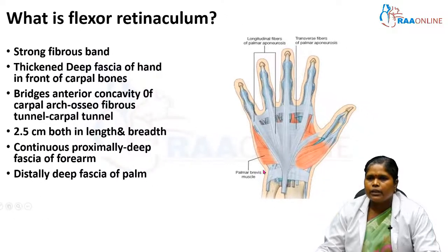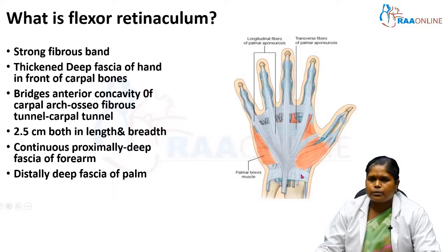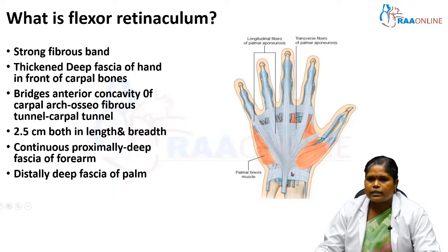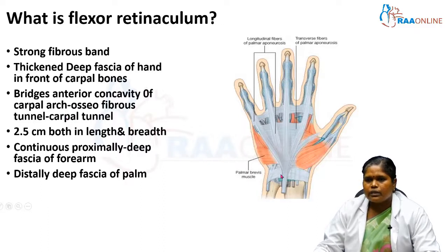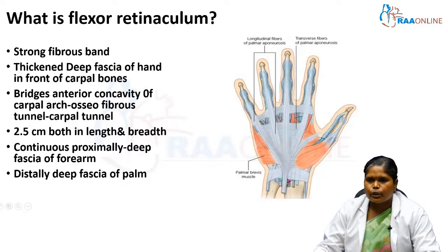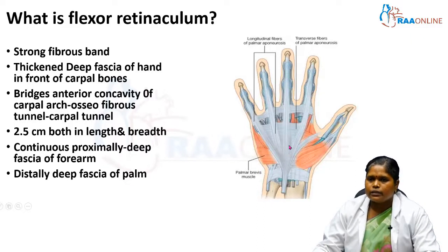The flexor retinoculum is a strong fibrous band made up of thickened deep fascia of the hand, situated in front of the carpal bones. It bridges the concavity of the carpal bones to form a tunnel known as the carpal tunnel. It measures 2.5 cm in both length and breadth. Proximally, it is continuous with the deep fascia of the forearm, and distally it continues as the palmar aponeurosis.